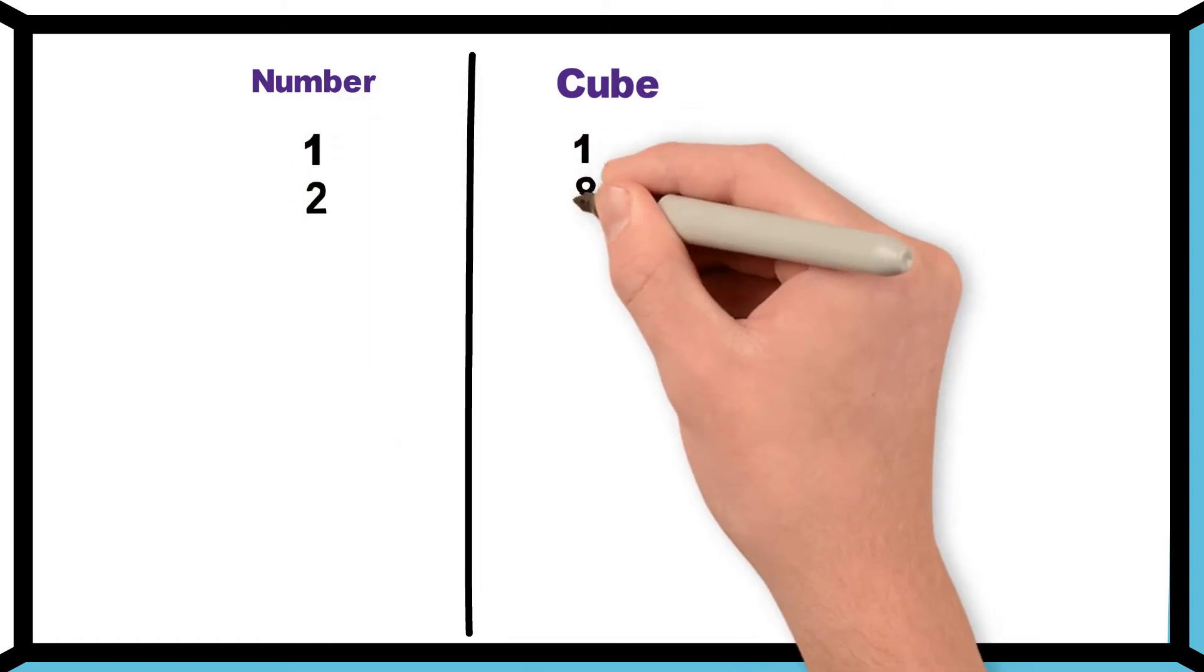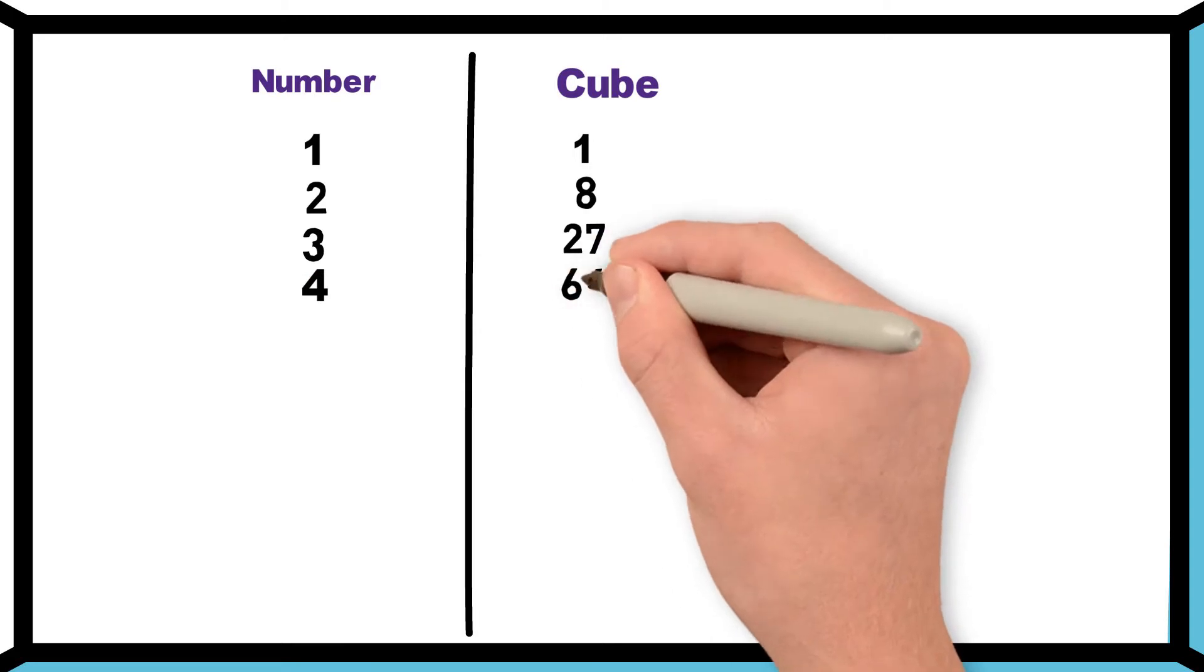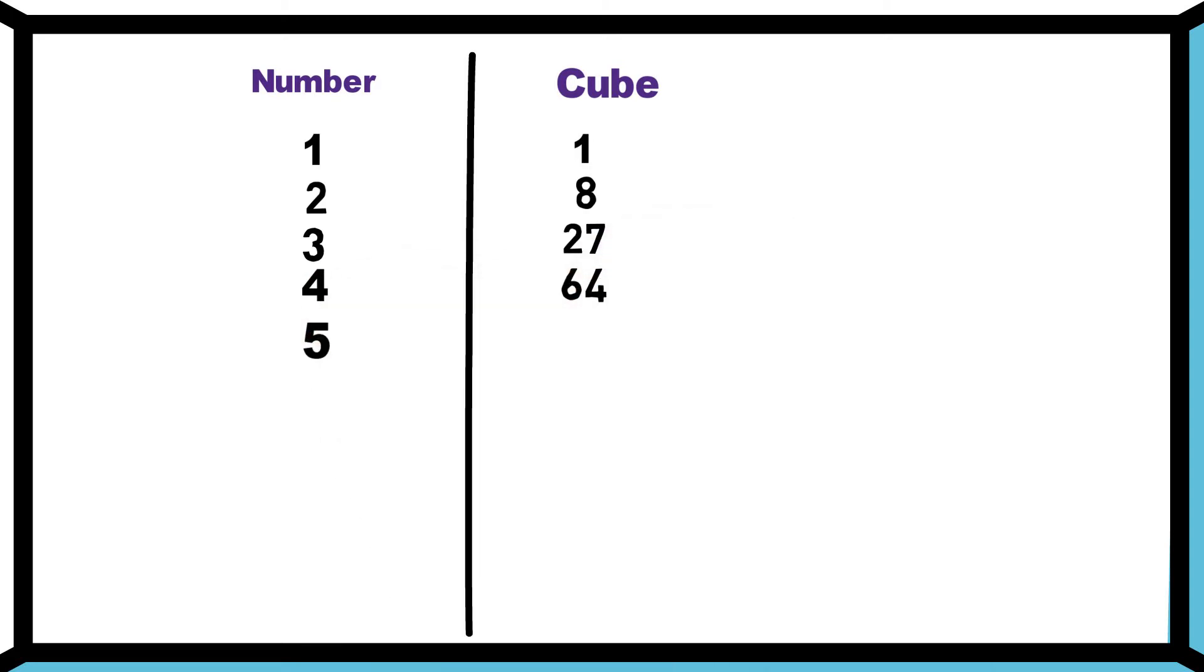To calculate the cube root of any number in 3 seconds using Vedic math, we need to remember the cube of numbers 1 to 10: 1 cube is 1, 2 cube is 8, 3 cube is 27, and so on.